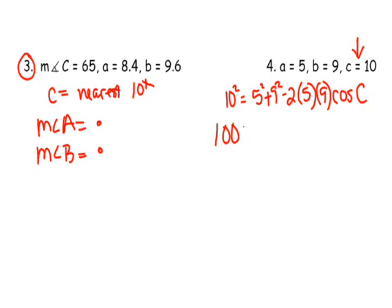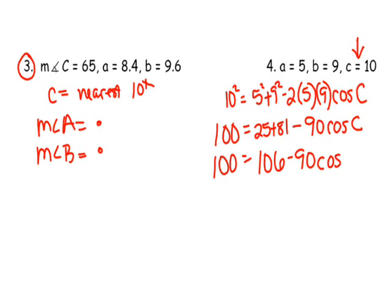All right, so this is 100 and that equals 25 plus 81 minus 2 times 5 is 10, so minus 90 cosine C. Here's where students run into trouble. They add these two together and they get 106 and then they get minus 90 cosine C.